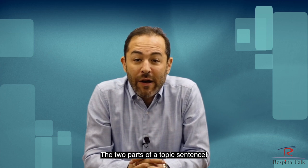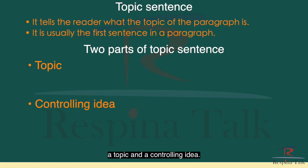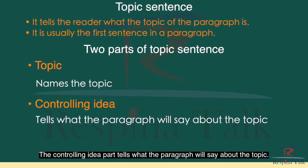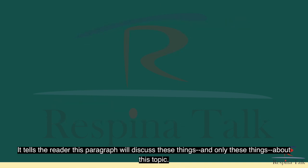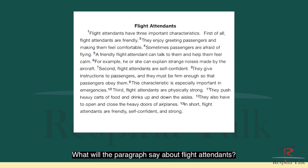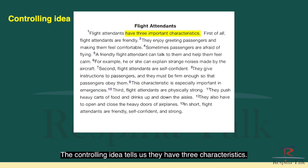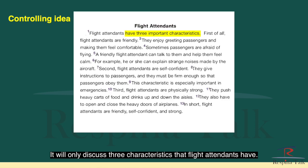A topic sentence has two parts: a topic and a controlling idea. The topic part names the topic. The controlling idea part tells what the paragraph will say about the topic — it tells the reader this paragraph will discuss these things and only these things about this topic. For example, the topic of the model paragraph is 'flight attendants.' The controlling idea tells us they have three characteristics. The paragraph will only discuss those three characteristics, not their uniforms, training, or duties.